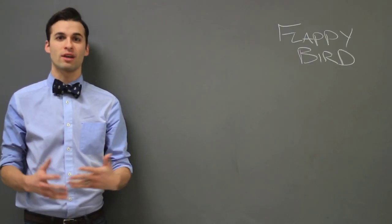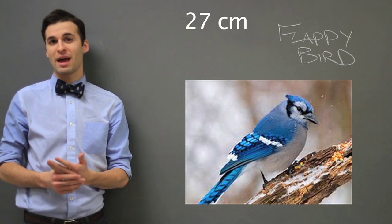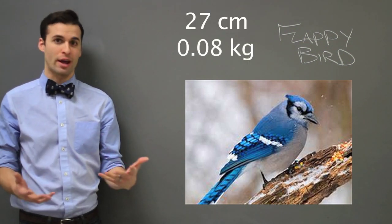Flappy Bird becomes about the size of a blue jay, which means he has a mass of about 80 grams.